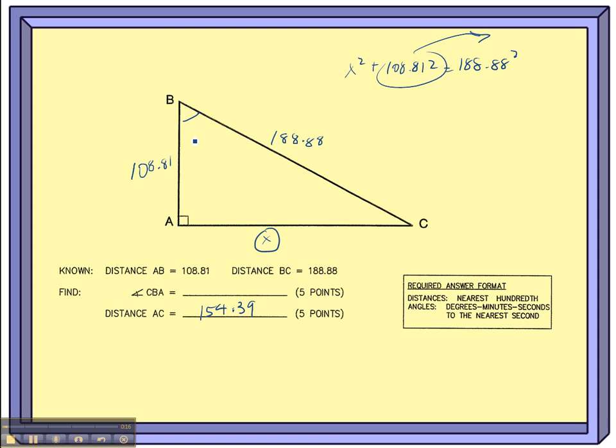If it's a right triangle, then it's a matter of just picking out a sine, cosine, or tangent ratio. So let's label our sides here. From our angle, this is our adjacent side because it's touching it, and the 188.88 is the hypotenuse. It's crossing the right angle.